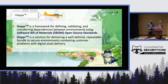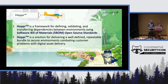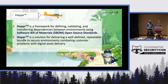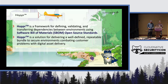That's where Hopper comes in. It's an open source project we've been working on — a framework for defining, validating, and transferring build dependencies between environments using software bill of materials. We are heavy users of CycloneDX. You've heard a lot this week about the executive order. Well, if we're already going to produce SBOMs, can they be the thing we use to move stuff between environments and package it up to give to a customer? Hopper provides this well-defined, repeatable solution.